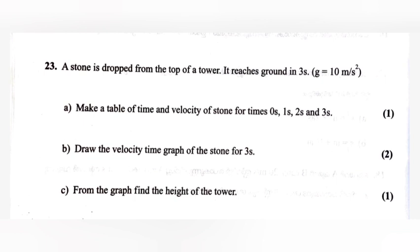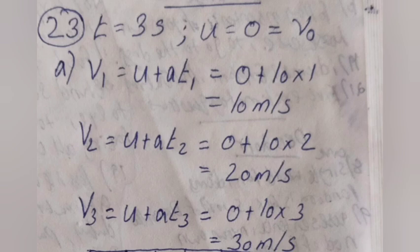Question 24.23: A stone is dropped from the top of a tower and reaches the ground in 3 seconds. Make a table of time and velocity of the stone for t = 0, 1, 2, and 3 seconds. Answer: t = 3s, u = 0, so v0 = 0; v1 = u + g×1 = 0 + 10×1 = 10 m/s; v2 = 20 m/s; v3 = 30 m/s.